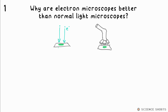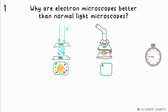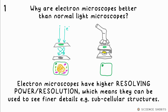Why are electron microscopes better than normal light microscopes? They have higher resolving power or resolution, meaning they allow finer details to be visualized, like cell organelles and subcellular structures.